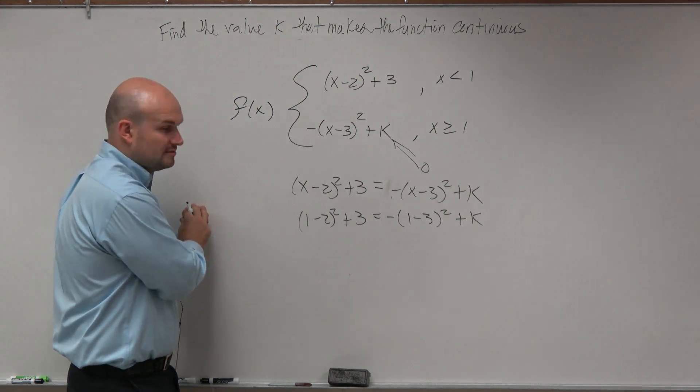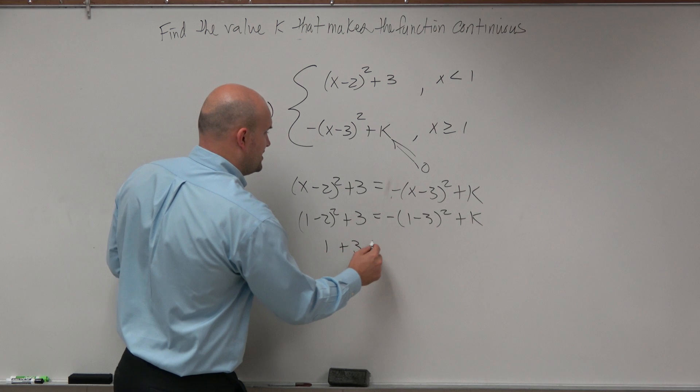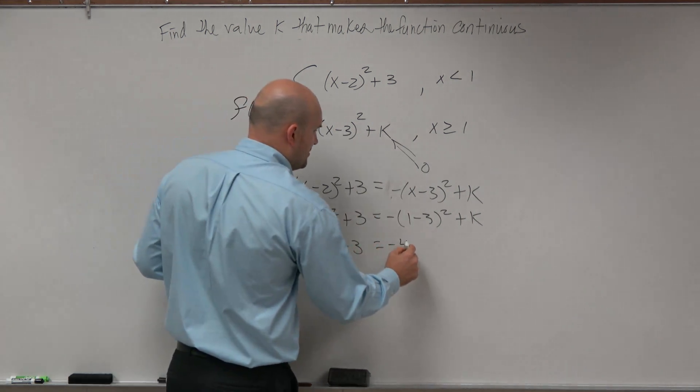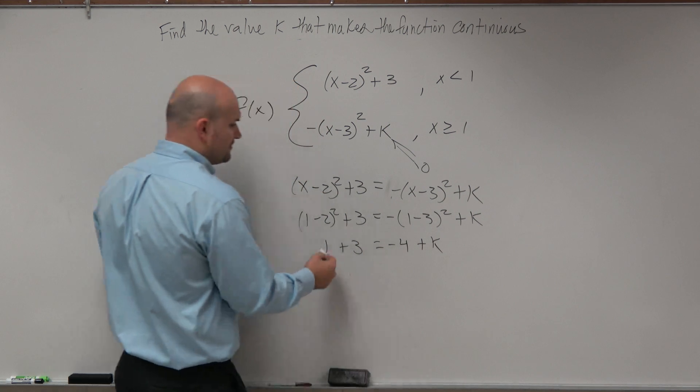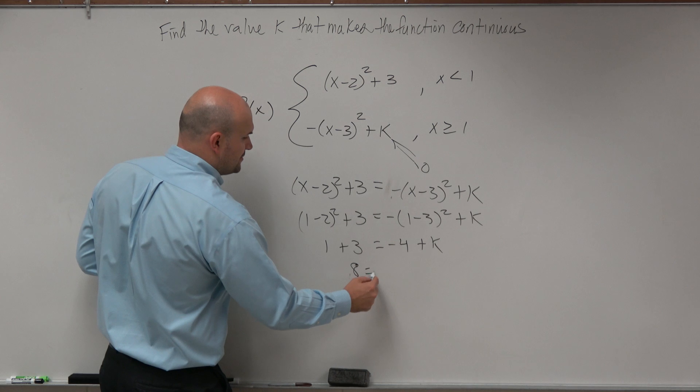Now, we can go ahead and solve for k. So therefore, we get (-1)² is 1 plus 3 equals 1 minus 3 is -2. (-2)² is positive 4 minus 4 plus k. 1 plus 3 is 4. And then plus 4, so that's going to be 8 equals k.